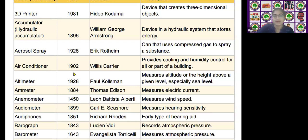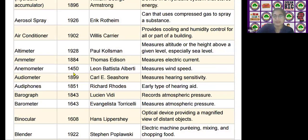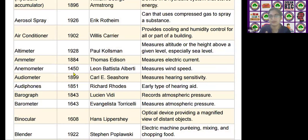The next scientific device is the altimeter. It was invented by Paul Koltzman in the year 1928. It measures altitude, or the height above a given level, especially sea level.